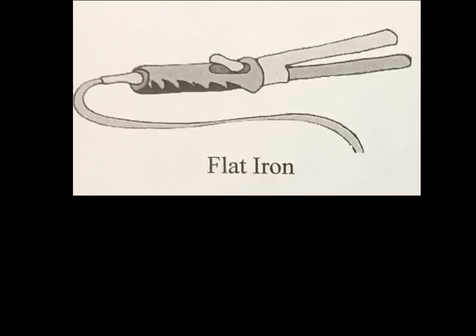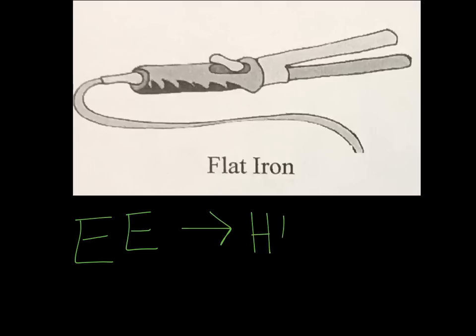Here we have a flat iron — what people use to straighten their hair. When you use a flat iron, you have heat coming out of it, but first you have to plug it into the wall. So you start with electrical energy, and this electrical energy turns into the heat energy required to straighten the hair.